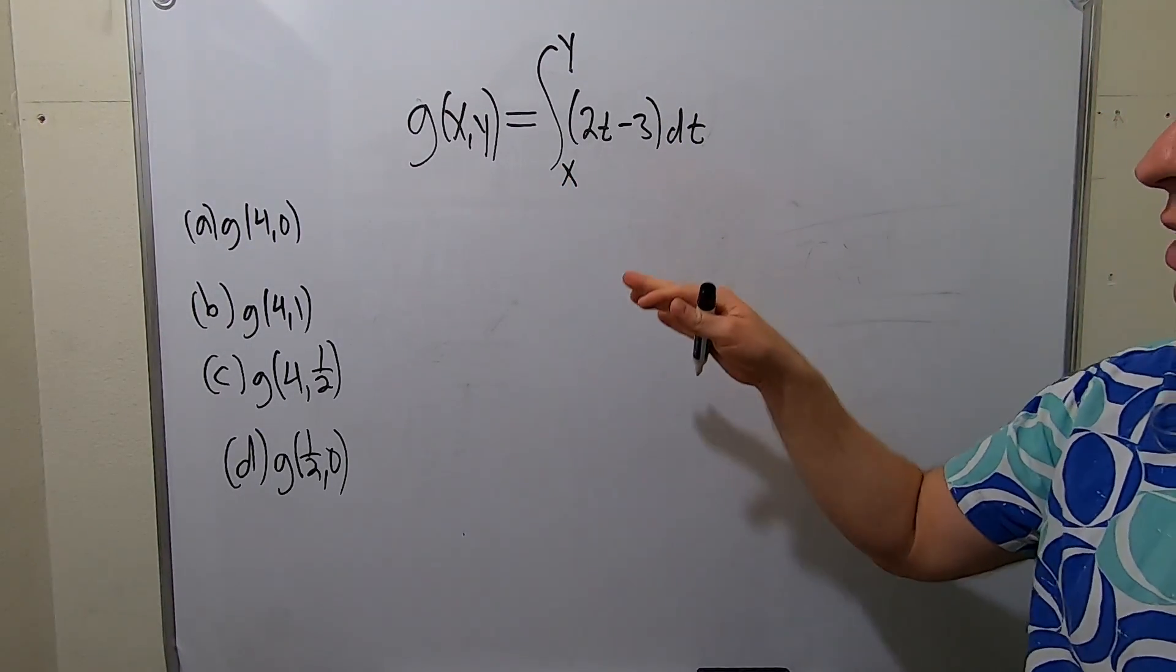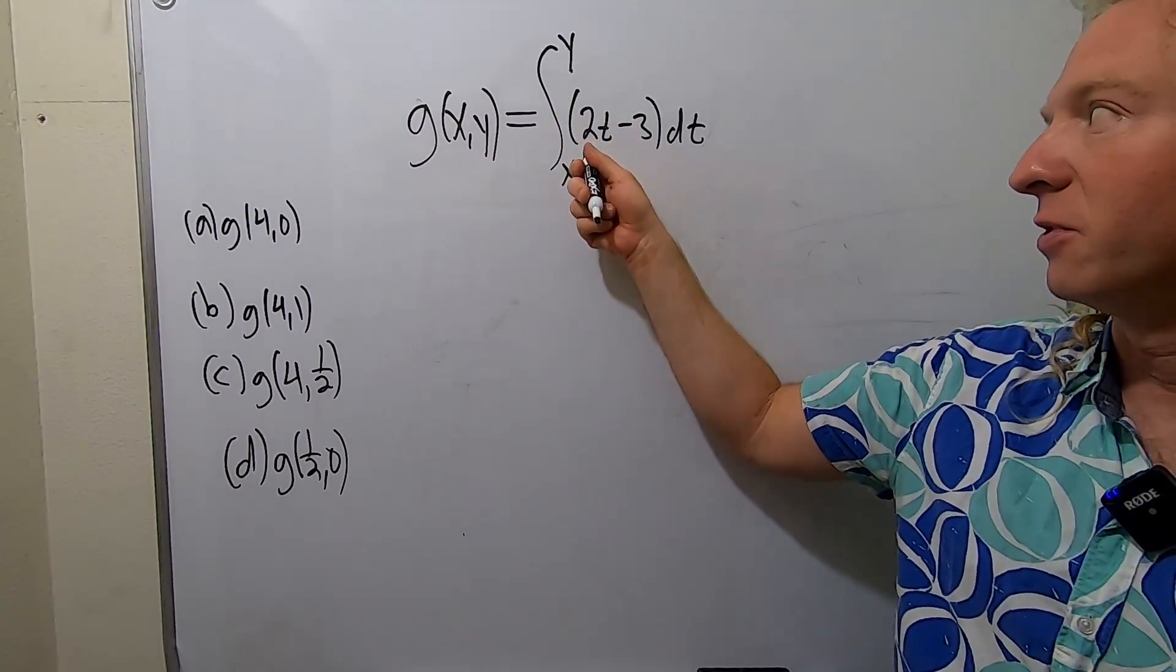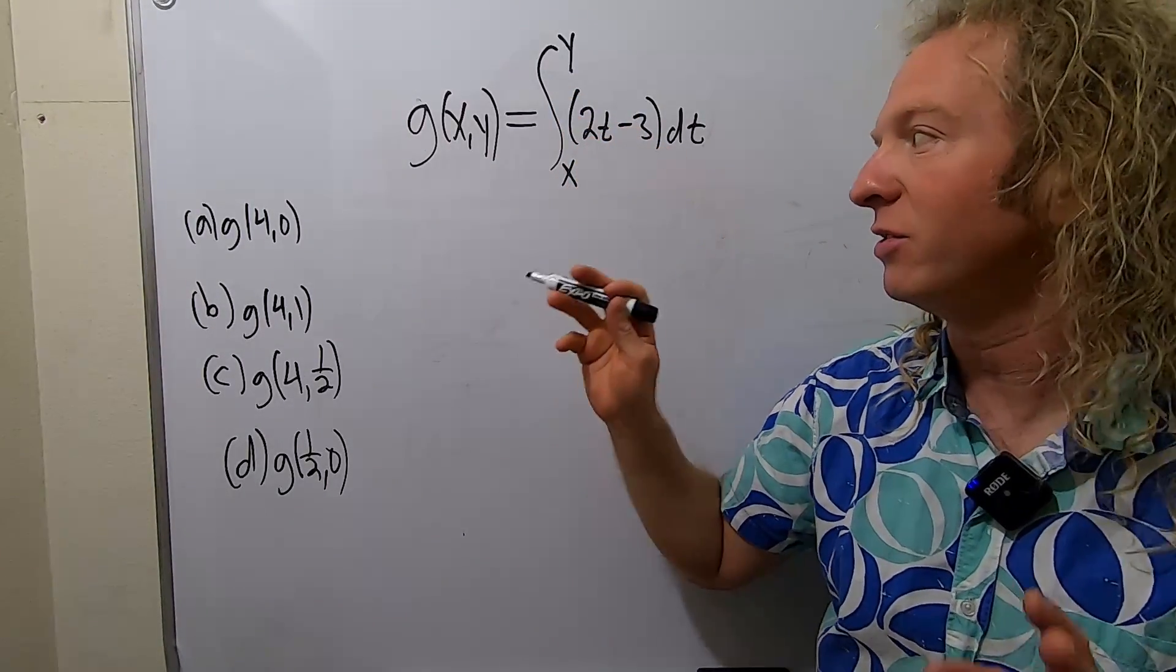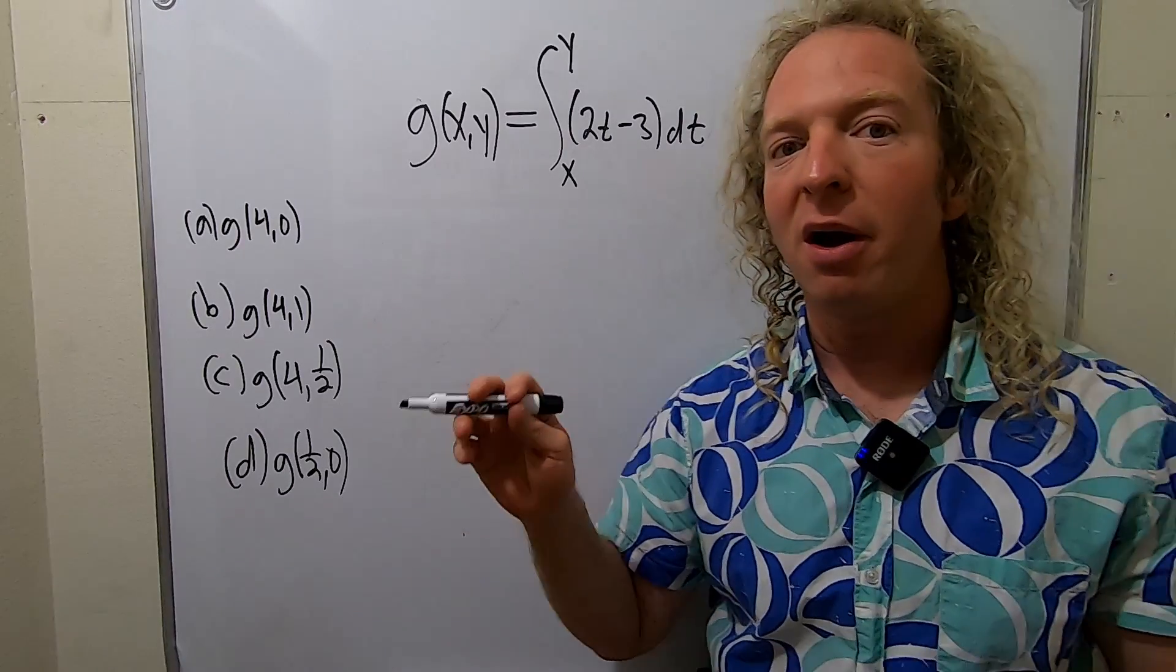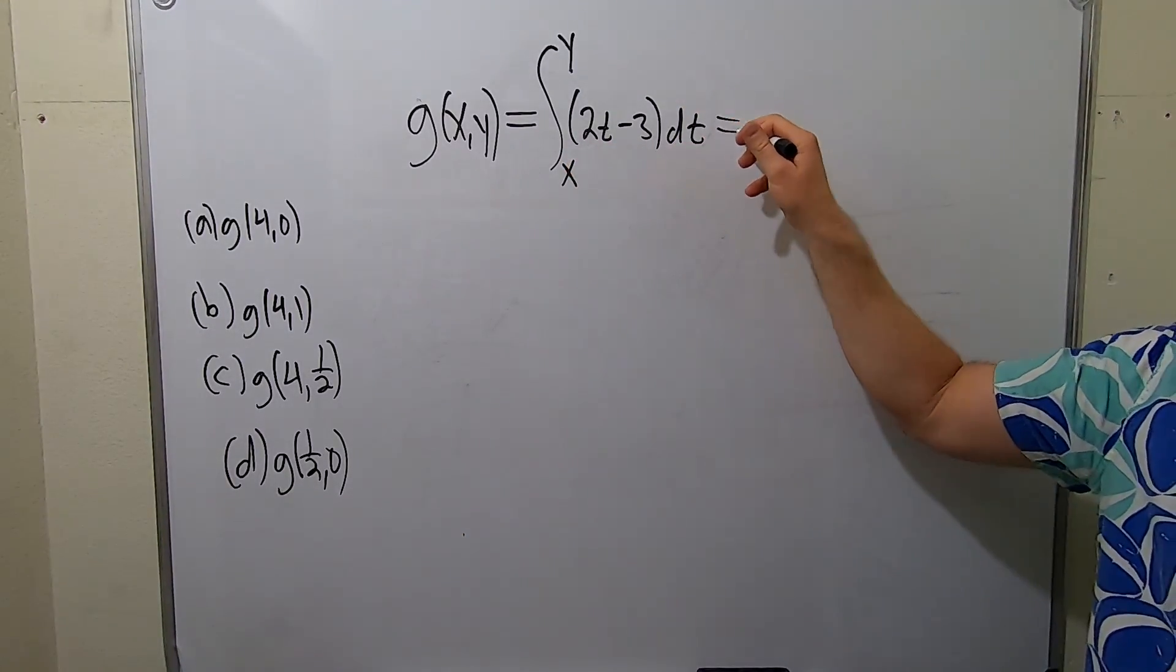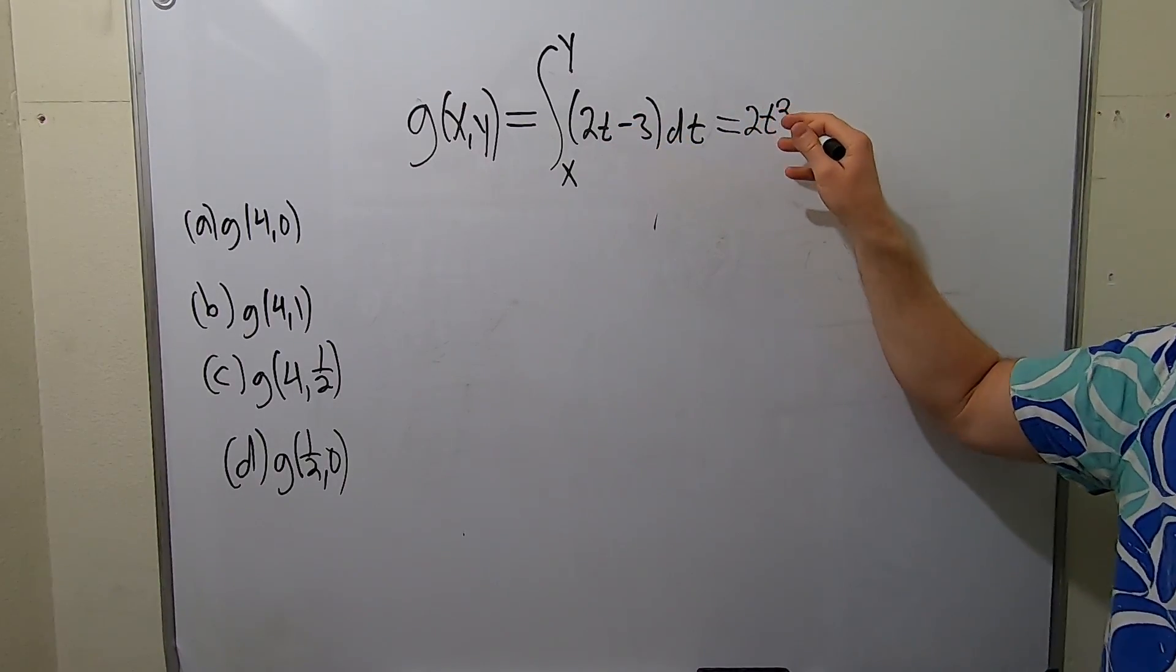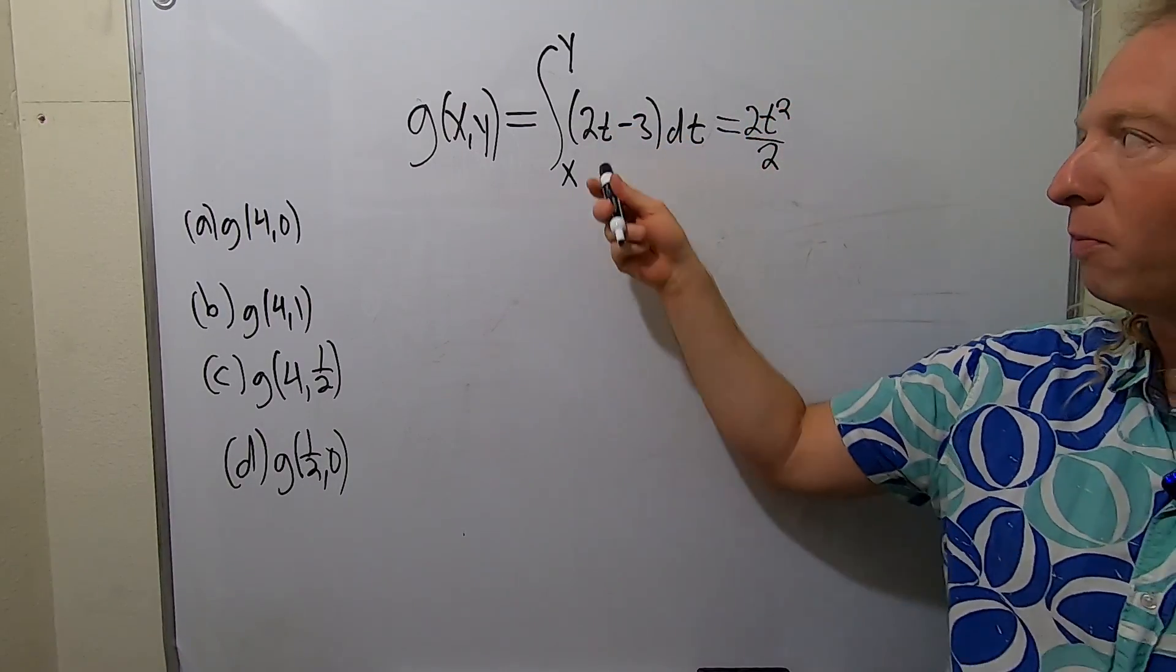Before we do any work, I think it might be a good idea to integrate this first. I haven't done this problem yet so I don't know how messy it will be. If you integrate this with respect to t you get 2t squared over 2 using the power rule minus 3t.